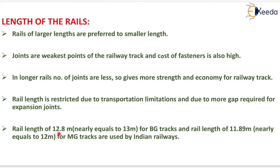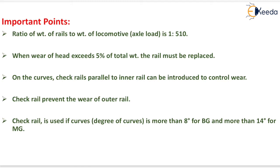Rail length of 12.8 meters (nearly 13 meters) is used for broad gauge tracks, and 11.89 meters (nearly 12 meters) for meter gauge tracks by Indian Railways. Important points: the ratio of weight of rail to weight of locomotive axle load is 1:510. When wear of the head exceeds 5% of total weight of the rail, it must be replaced. On curves, check rails parallel to the inner rail can be introduced to control wear. Check rails prevent the wear of the outer rail, and are used if the degree of curve is more than 8 degrees for broad gauge and more than 14 degrees for meter gauge.